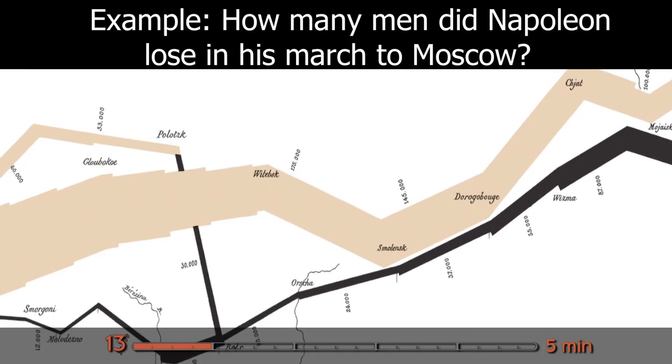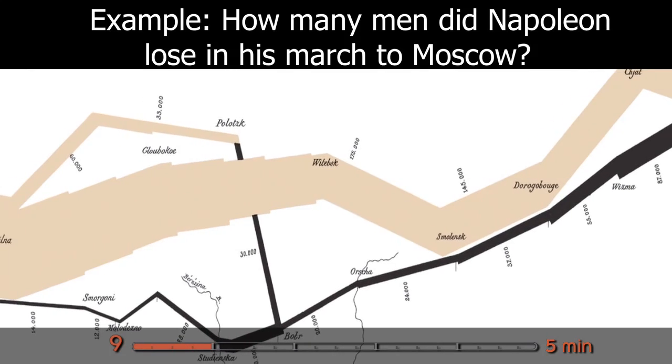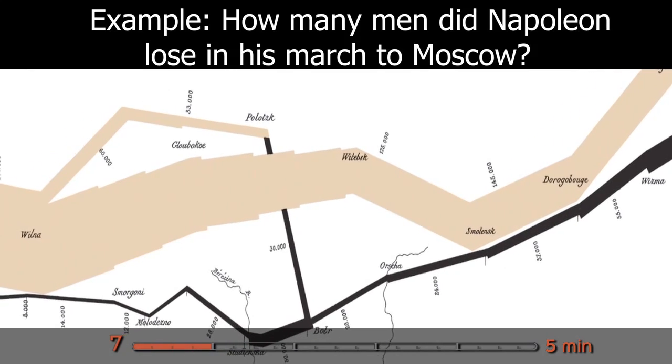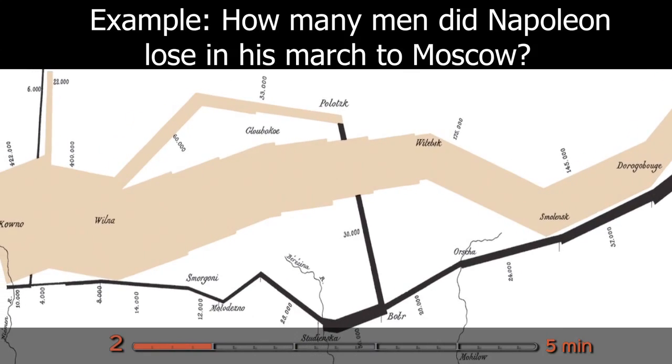Which is answered with this graphic. We've got the brown line showing how many he started out with. He loses them there. He loses them back. I could give you the numbers, but it wouldn't make quite the impact. With the visualization we see the scope of the losses.